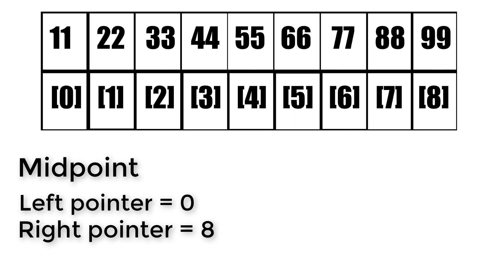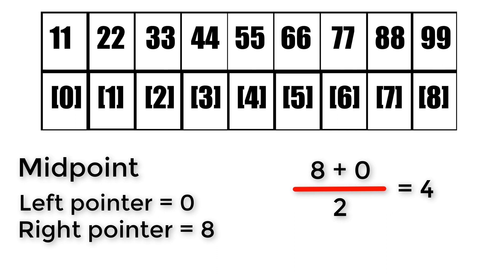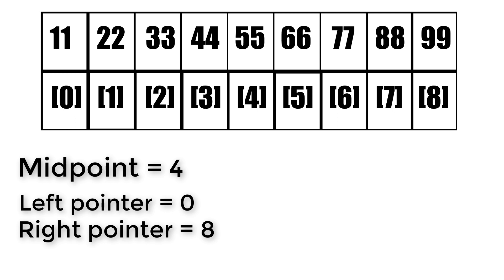So we have a midpoint — how do we calculate a midpoint? We get the rightmost value and the leftmost value using the right and left variables, which in this case would be 8 and 0 respectively. So we get 8 plus 0 over 2, which is equal to 4. We get the rightmost value, add the leftmost value, then divide by 2, and that gives us the midpoint which is 4. So whatever value is in the index of 4 is going to be our midpoint value.